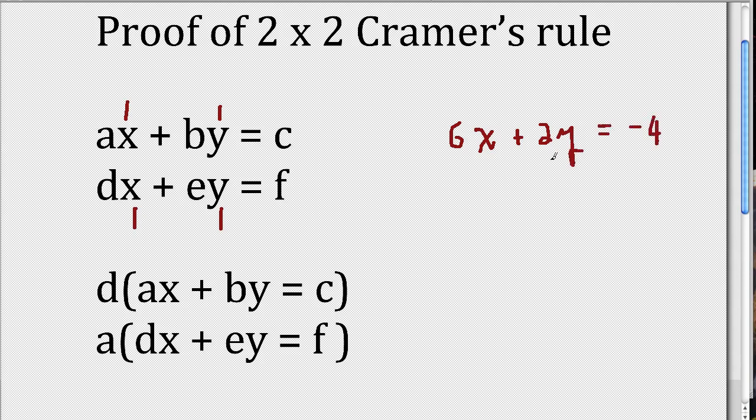Okay, so A, B, and C represent constants, and X and Y are the variables in the equation. So how would we solve this set of two equations using our traditional algebraic techniques to find X and Y?